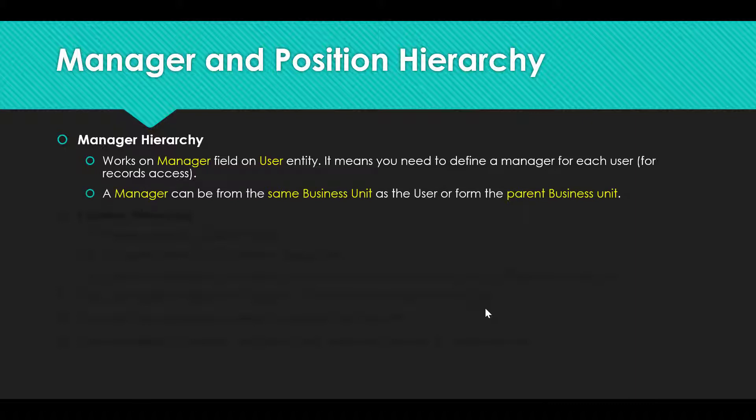A manager can be from the same business unit as the user or from the parent business unit. It cannot be from a child business unit. So for example, if the user belongs to level P, the manager can be from level P or level A, but not from level C of the hierarchy. When you define hierarchy permissions, you need to define at which level the user needs to have access to the records.